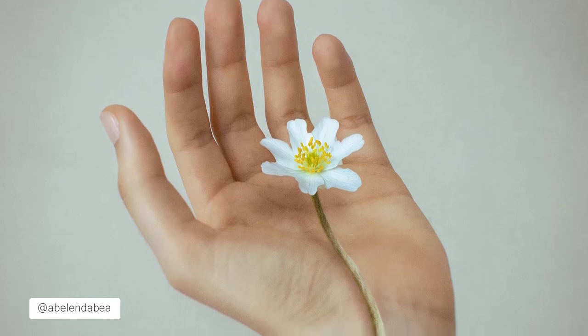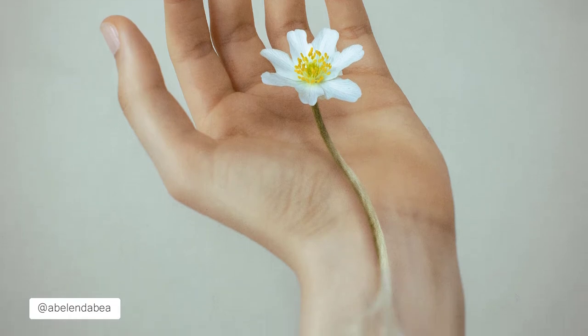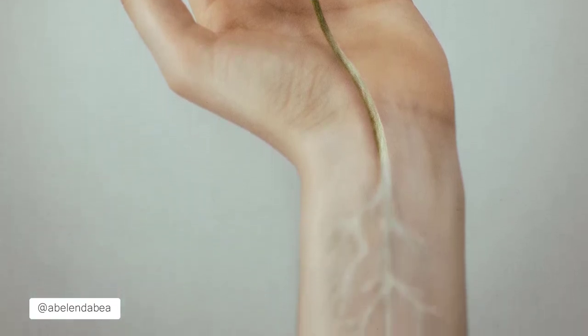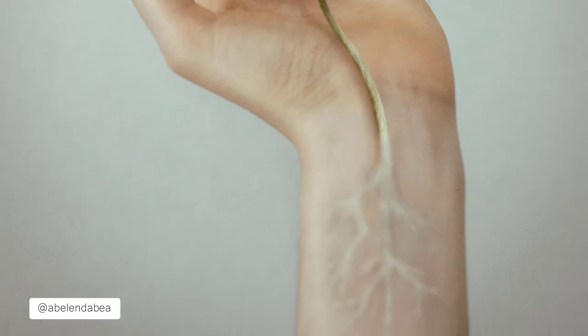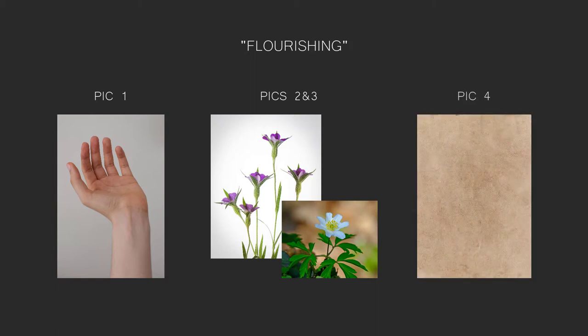Hi, this is Beatriz and in this video I'm going to show you the step-by-step editing process of my latest conceptual artwork, Flourishing. In order to create this picture I used four images: a picture that I took of my hand, two pictures from a free image bank which contained the flower and the stem, and finally a texture. I will add those image banks that I use the most in the description below.